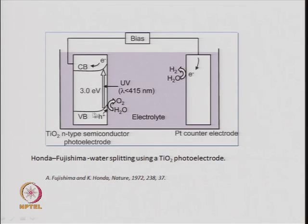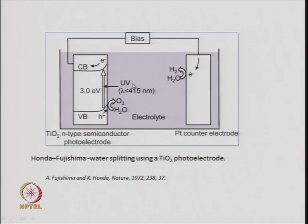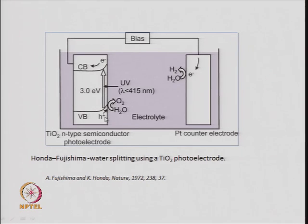An electron can be transferred from the valence band to the conduction band only when the light has energy more than the band gap of around 3.1 electron volts. For that the light must have a wavelength less than 450 nanometers — that is in the ultraviolet region of the electromagnetic spectrum. When this light falls on the titanium dioxide electrode, electrons are produced in the conduction band and holes remain in the valence band.